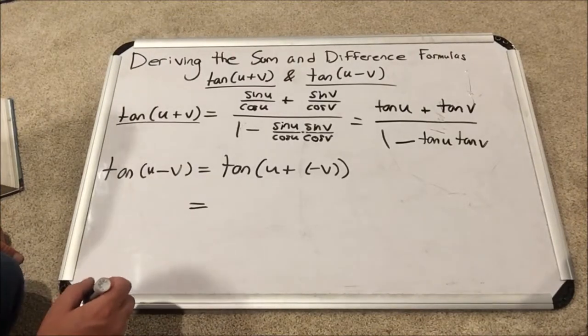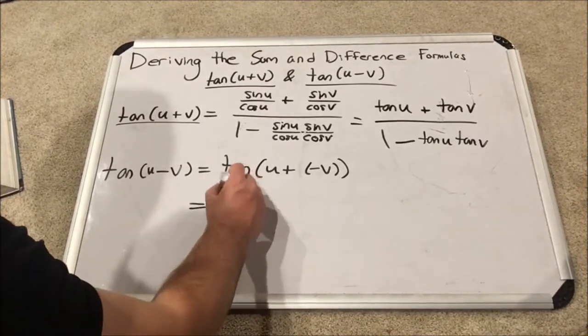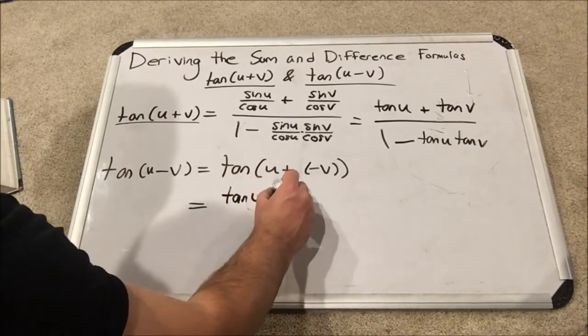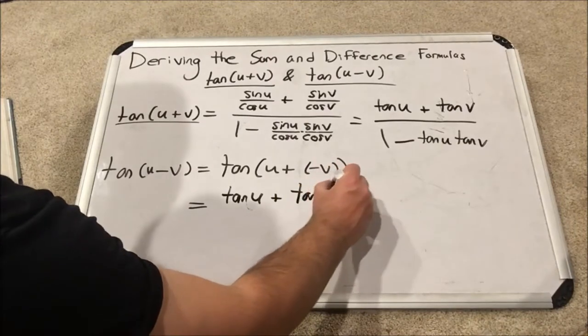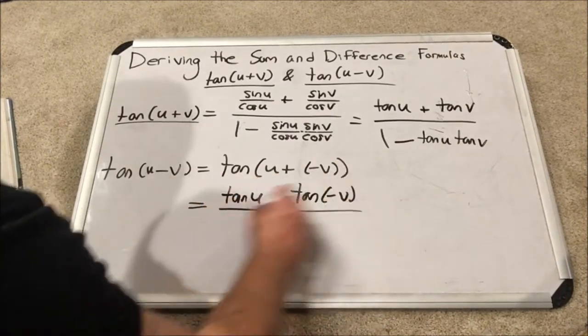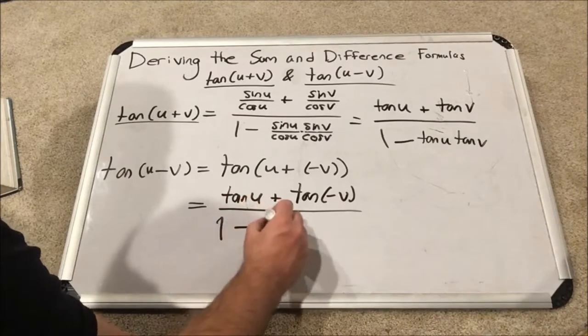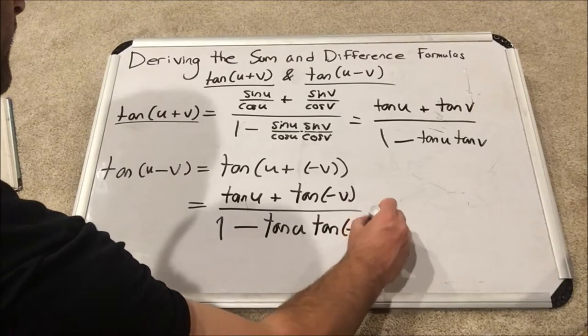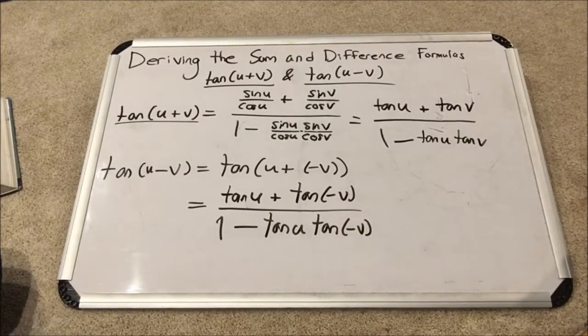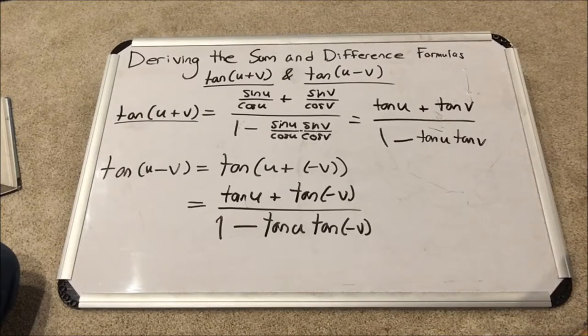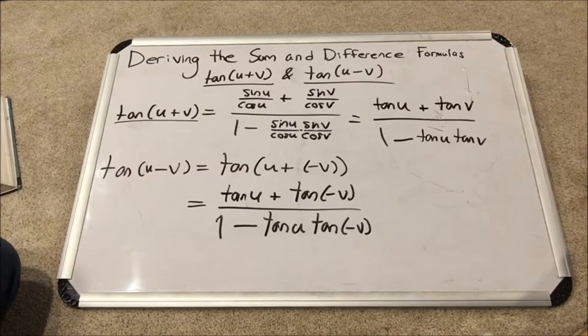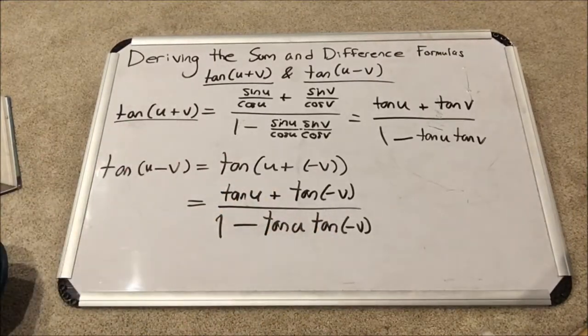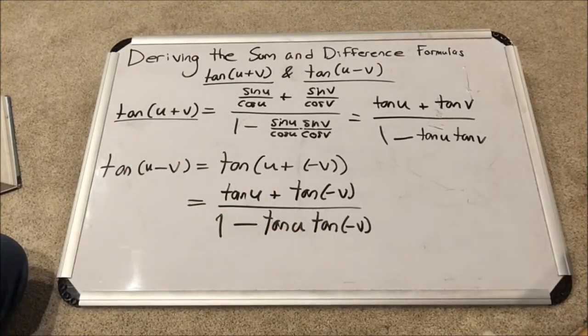So tangent u plus negative v is equal to tangent u plus tangent negative v over one minus tangent u tangent negative v. As before, the second part and the first part, we need to discuss the odd and even nature of all the trig functions that have a negative angle to evaluate. It's just tangent negative v both on top and bottom. Well, as it turns out, tangent is odd.